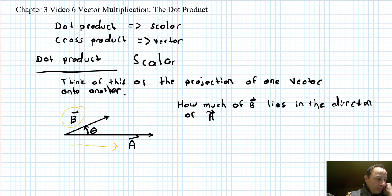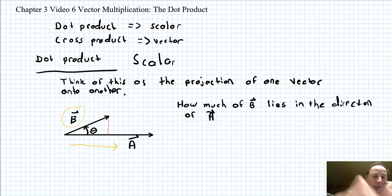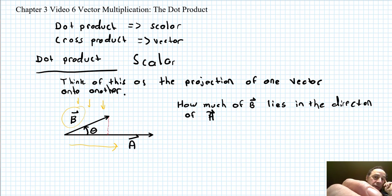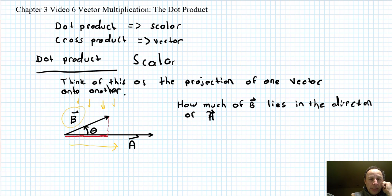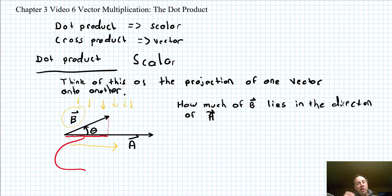Just like we did before — thinking about projecting down onto A — you have a light projecting and you get a shadow down here. You get a projection of B right up to this point. This right here is the projection of B onto A, and that mathematically is B cosine theta.